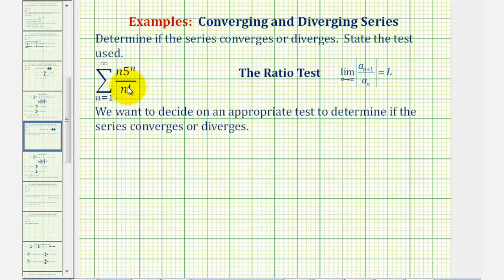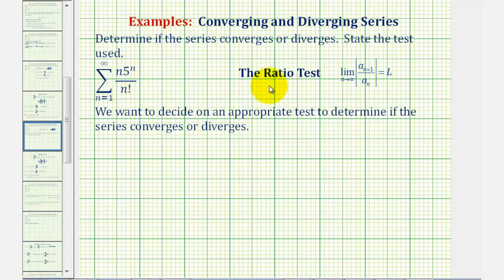We want to determine if the infinite series converges or diverges. Taking a look at our infinite sum, notice that the formula, or a sub n, contains five to the power of n and n factorial. Whenever we have an exponential or a factorial, the ratio test is normally the test that we should apply.